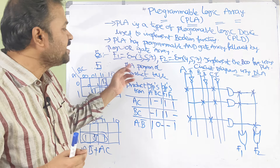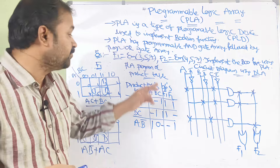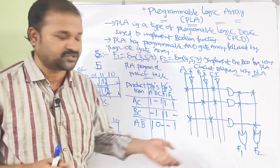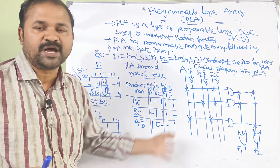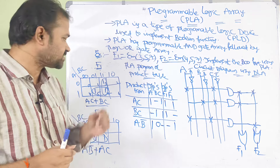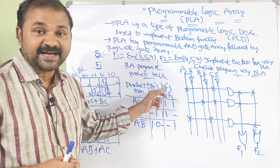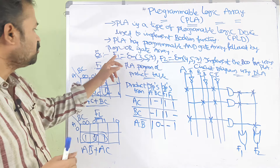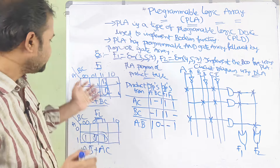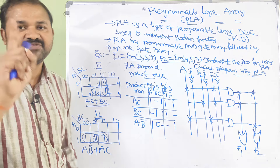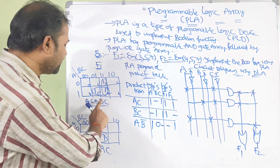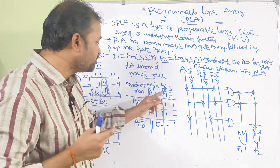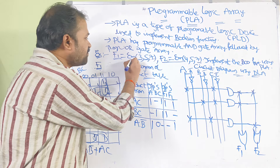After that we have to draw the PLA programming table, also called the product table — this is very important and exam questions may be asked on it. The PLA program table mainly contains three columns: the first column is the product term, the second column is inputs (A, B, C), and the third column is outputs (F1, F2). Since AC appears twice, we write it only once. So the product terms are: AC, BC, and AB̄.